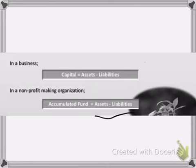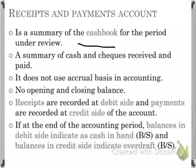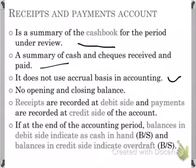Now we look at the formats of the accounts explained earlier. For a club, instead of a bank account we make a receipts and payments account. There is no major difference between a receipts and payments account and a bank account — it is a summary of the cash book for the period under review, made just like a normal bank account. It is a summary of cash and cheques received and paid. Importantly, it does not use the accrual basis of accounting — all money received is recorded on the debit side and all money paid is recorded on the credit side, without any adjustments for timing.